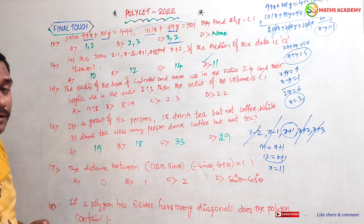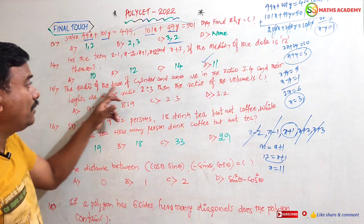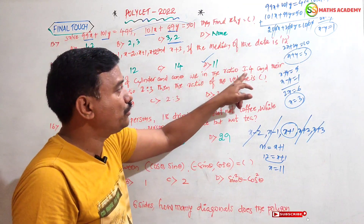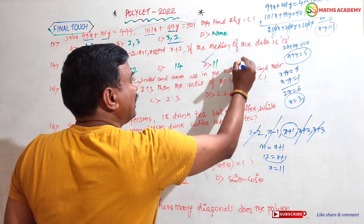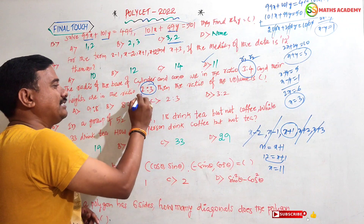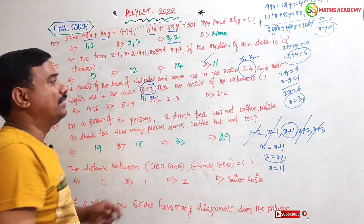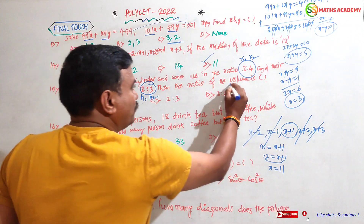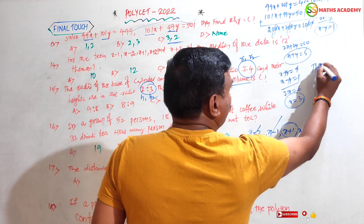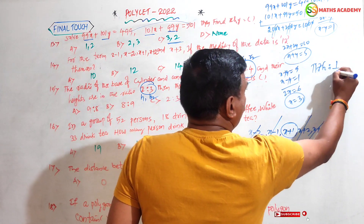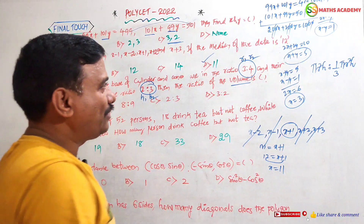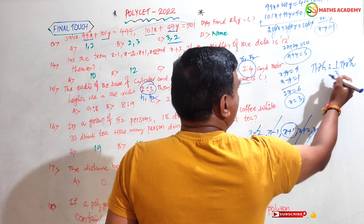Question number 15 — an important question from mensuration. The radius of the base of a cylinder and cone are in the ratio 3:4, and their heights are given. The question asks for the ratio of their volumes. Volume of a cylinder is πr²h and volume of a cone is (1/3)πr²h.